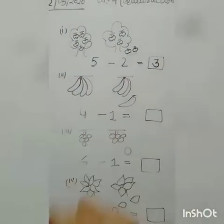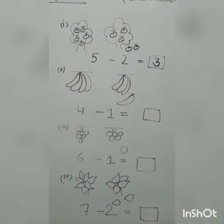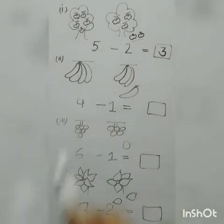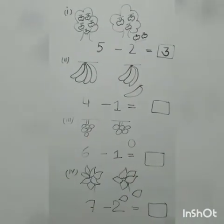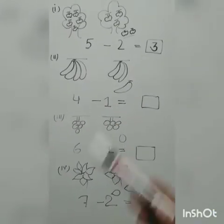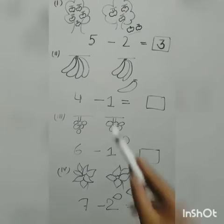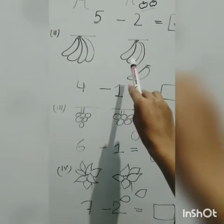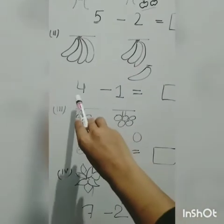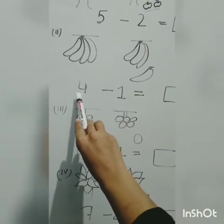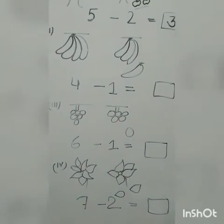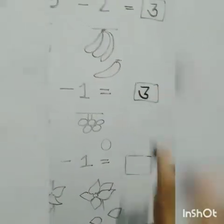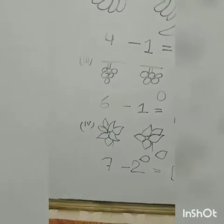The second question: there is one bunch of banana with one, two, three, four bananas. Write four. Someone took away one banana, so write one — take away one. How many bananas are left? One, two, three. So four minus one, the remaining bananas are three. Write three.